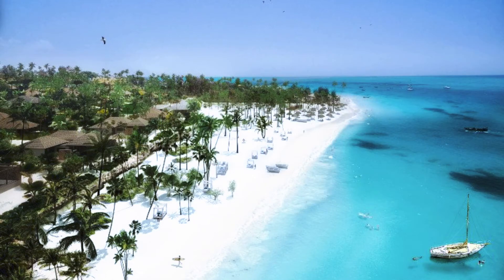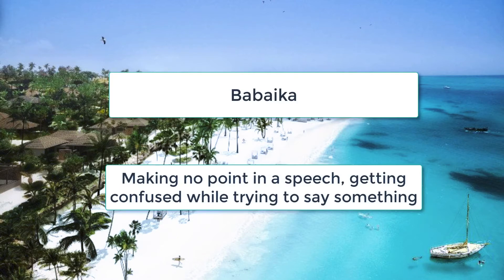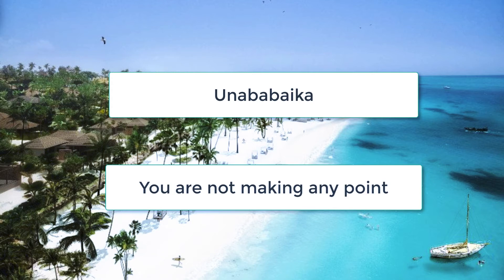The next word is Baabaika. Baabaika means to be confused, or not really making something clear. For example, if you don't know what you want to say, in Swahili we say unababaika. Una means 'you are doing something right now,' so unababaika means 'you are confused right now' or 'you are not making anything clear.'